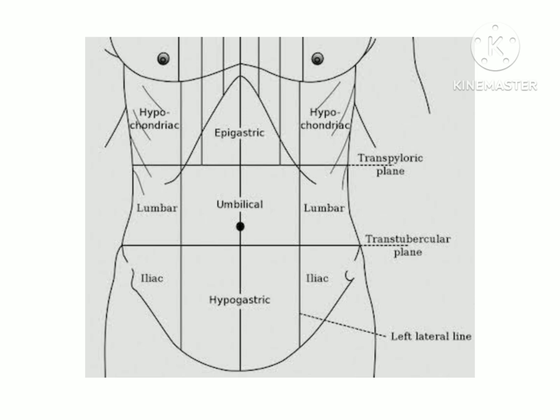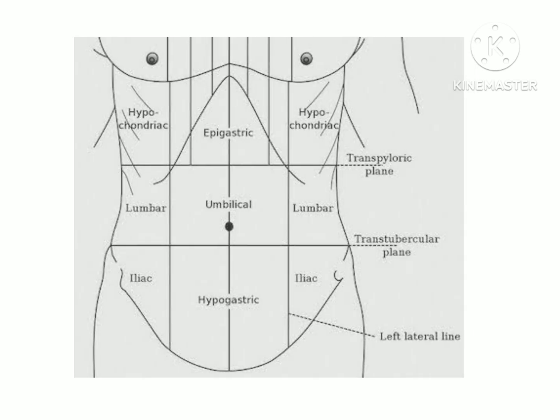In the middle portion, on the right side you have the right lumbar region. In the middle is the umbilical region. And on the left side is the left lumbar region. In the lower portion, on the right side is the right iliac fossa. In the middle is the hypogastric region. And on the left side is the left iliac fossa.